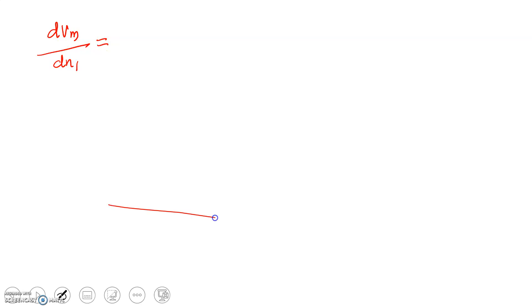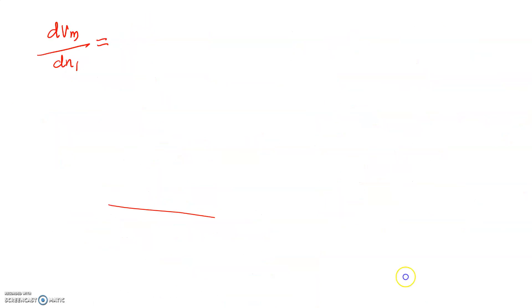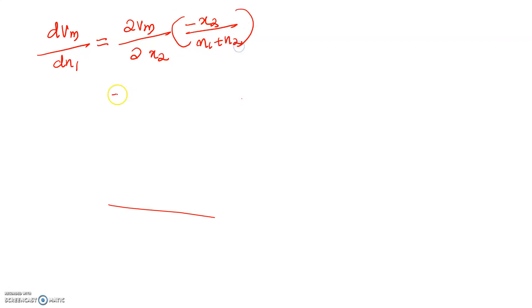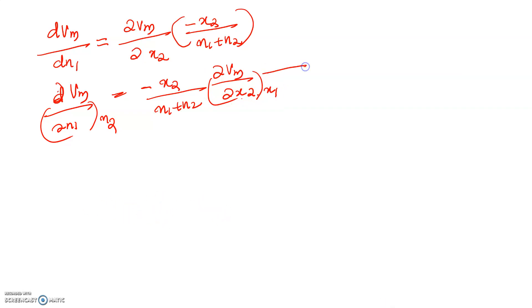Substituting equation 5 into equation 2: dVm/dn₁ equals ∂Vm/∂x₂ into (minus x₂)/(n₁ + n₂). This can be rewritten as ∂Vm/∂x₂ into (minus x₂)/(n₁ + n₂), which gives ∂Vm/∂x₂ multiplied by a constant x₁. Let this be equation number 6.